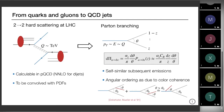By conservation this is going to be one minus z. If I compute the probability for this process to happen, it is proportional to the splitting function — alternatively the Altarelli-Parisi splitting function — and the strong coupling at the vertex, plus a phase space factor. Taking the leading contribution to the splitting function gives a 1/z, and the phase space for this splitting contains a small coupling factor, compensated by the divergent structure of the kinematic phase space where we see the collinear and soft divergences of QCD.